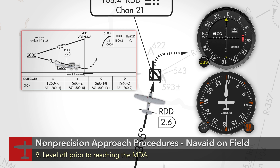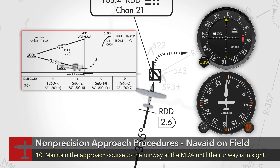Prior to reaching the minimum descent altitude, initiate a level off by adjusting pitch and power so as to maintain the MDA at the appropriate instrument approach airspeed. Maintain the approach course to the runway at the MDA until the runway environment is in sight, and then begin a descent to a landing on the intended runway.